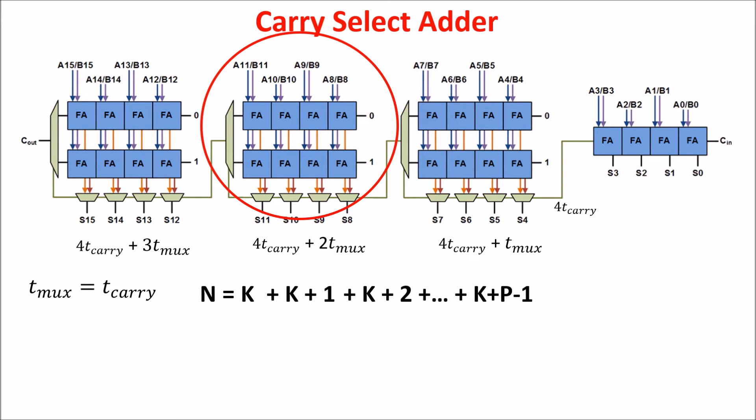We obtain this series, where P is the number of blocks, but this time P is different from N over K because the blocks have a different number of bits.